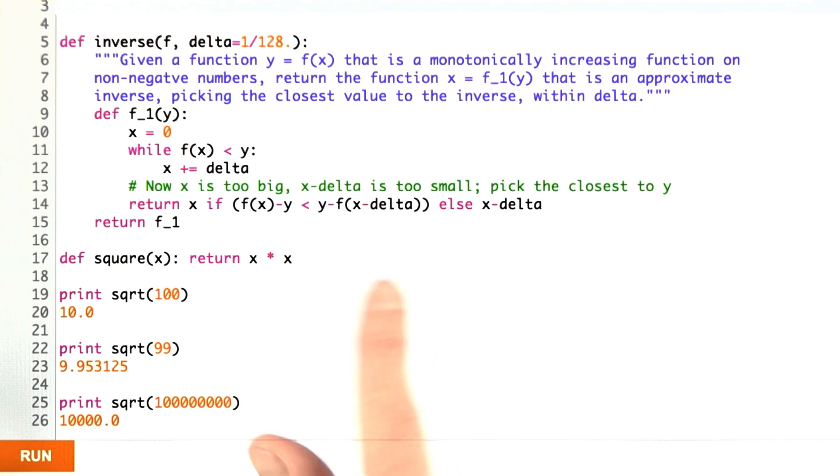So we're somewhere in between the two and we want to pick the closest one. That's what this expression does. It says we know the result is somewhere in there and we want to choose which one is closer. How does that work?